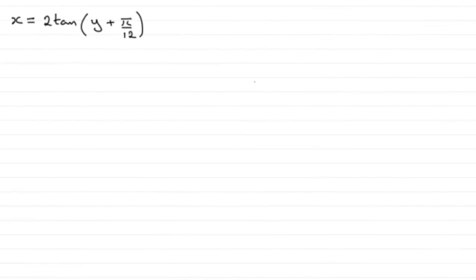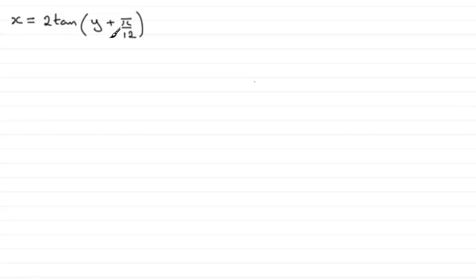For this question, we're told that we've got a point P on the curve x equals 2 tan of (y plus π/12), and it's got a y-coordinate of π/4. What we've got to do is find an equation of the normal to the curve at P.